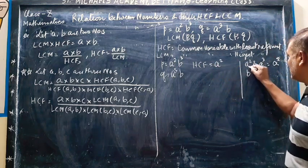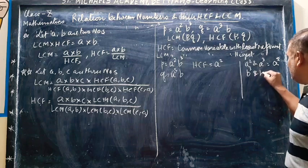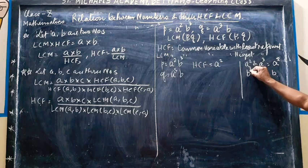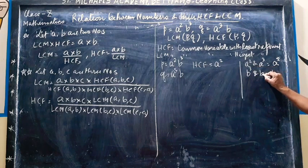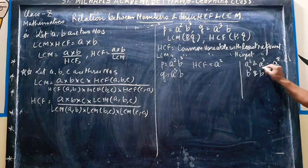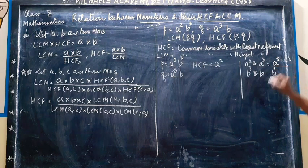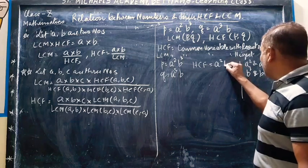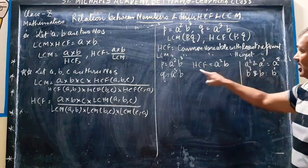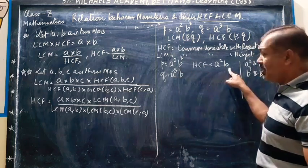Now, B cube and B. Common variable is B. Here, power 3 and here power 1. So this exponent is 1. So B cube and B, the HCF is B. So the HCF of P and Q is A square B.